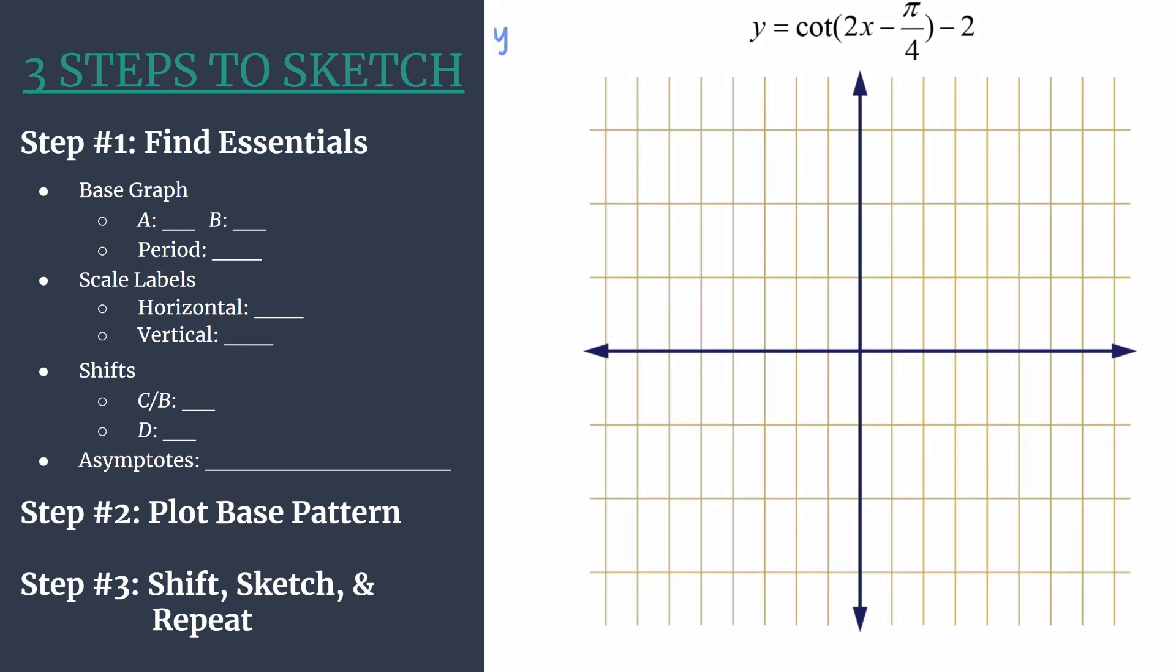As we start, remember this is the general form of a shifted cotangent equation: y equals a cotangent of bx minus c plus d. That'll help us as we're identifying each piece and doing our analysis. We start with our base graph. a is a coefficient in front of cotangent, and here it's an understood 1. That'll help us get y coordinates for our curve shaping points and our base pattern. b is the coefficient of x, we can see clearly here it's a 2. That tells us we should have two cycles that happen between 0 and π for our graph. That's always the case for cotangent.